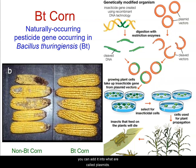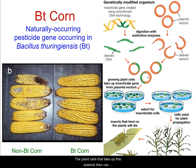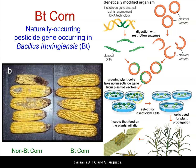Plasmids are little pieces of DNA produced by bacteria. You can inject plasmids into growing plant cells. The plant cells that take up this plasmid can then produce their own version of this pesticide. That's because a gene in a bacterium uses the same A, T, C, and G language as the genome of corn, which uses the same A, T, C, and G language.